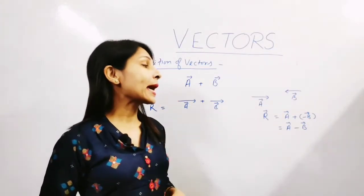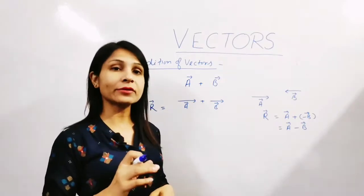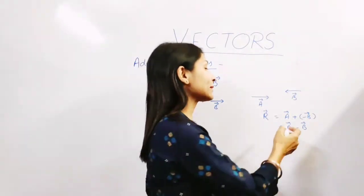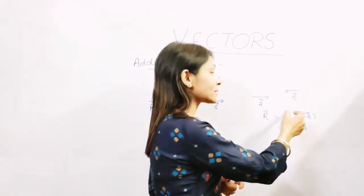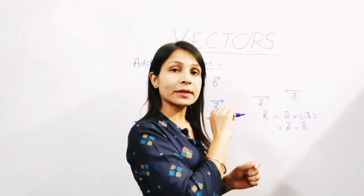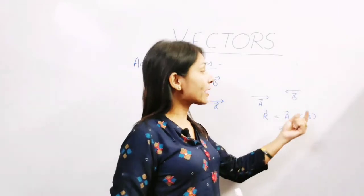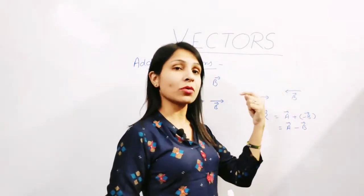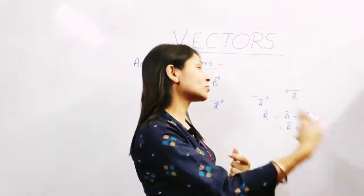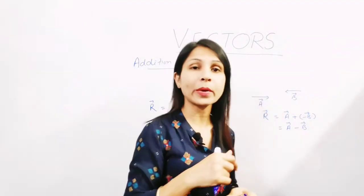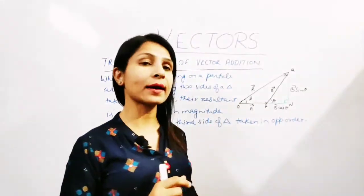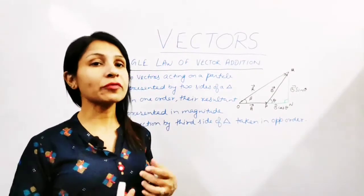And the resultant will be towards the vector which is greater in magnitude. If vector A is more in magnitude, then the resultant will be towards the direction of vector A. Or if the magnitude of vector B is more, then the resultant will be in the direction of vector B. If we have two vectors acting at a certain angle, then what we will do? We will follow some rules.